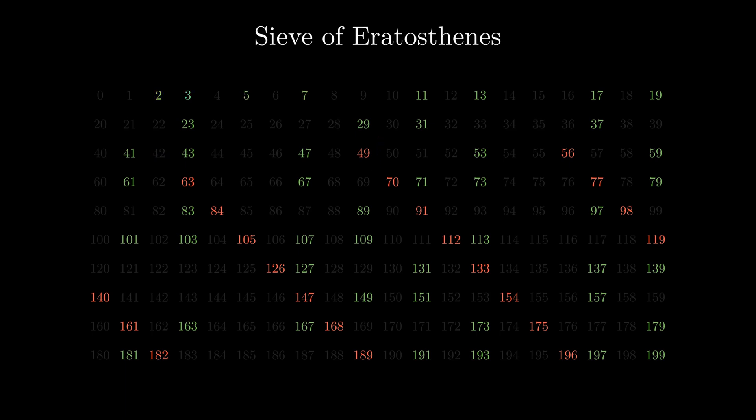So when we start processing the number 7, we can start removing that non-prime number starting from 49 instead of 14. And this significantly speeds up the algorithm as we avoid performing a lot of redundant operations.